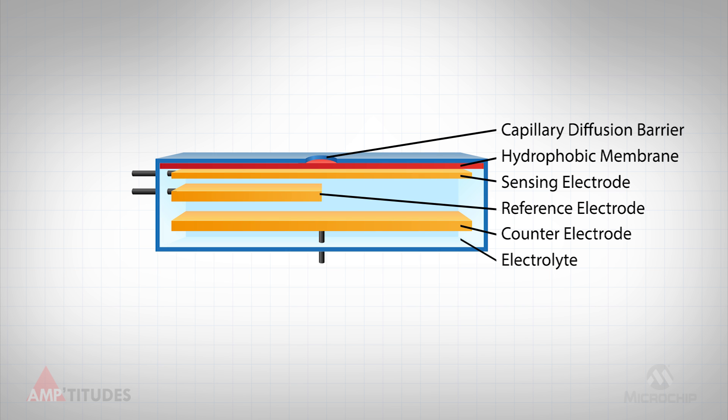As the target gas passes through the membrane, it reacts with the surface of the sensing or working electrode, causing either an oxidation or a reduction. If the sensing and counter electrode are connected on the outside of the cell, a current will flow that is proportional to the amount of gas concentration.